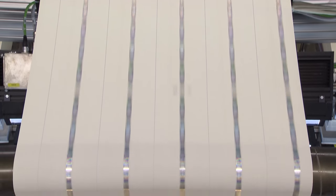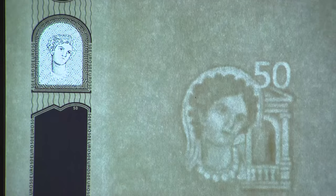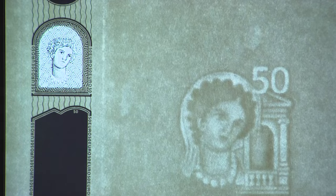Some security features, such as the watermark, the security thread and the hologram, are embedded in the paper at the paper mill.